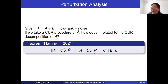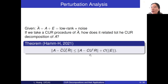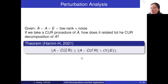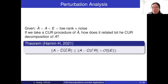If A is an incoherent matrix, and we choose the row and column indices uniformly, then this residual term equals zero with high probability, meaning the bound reduces to just the noise term. Any questions?